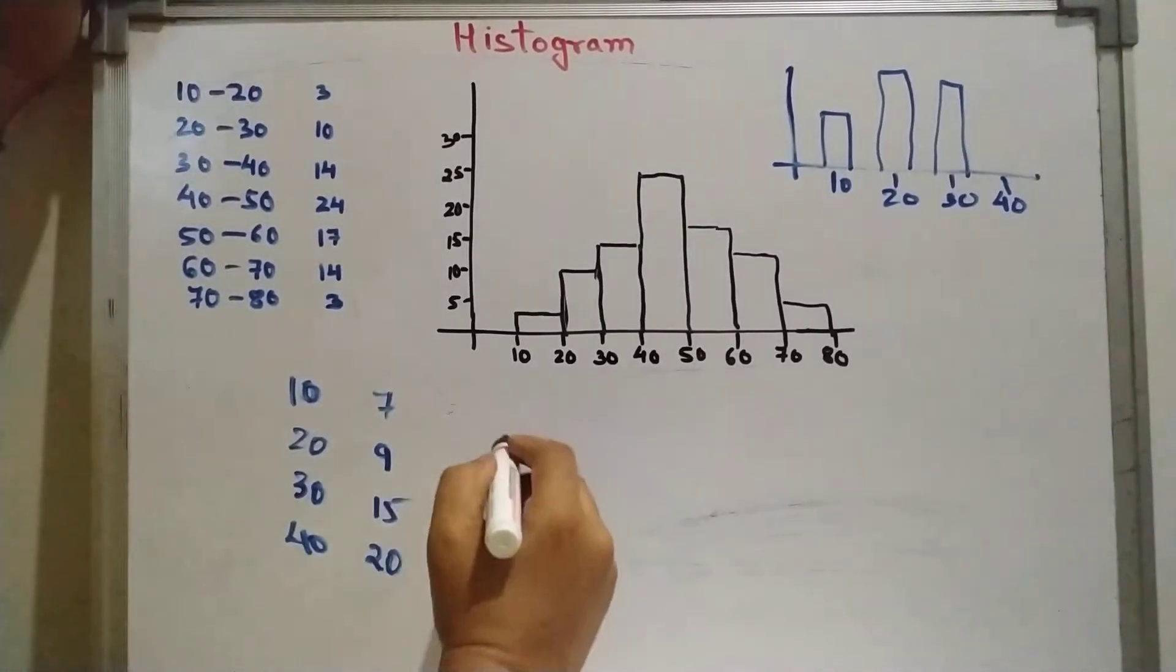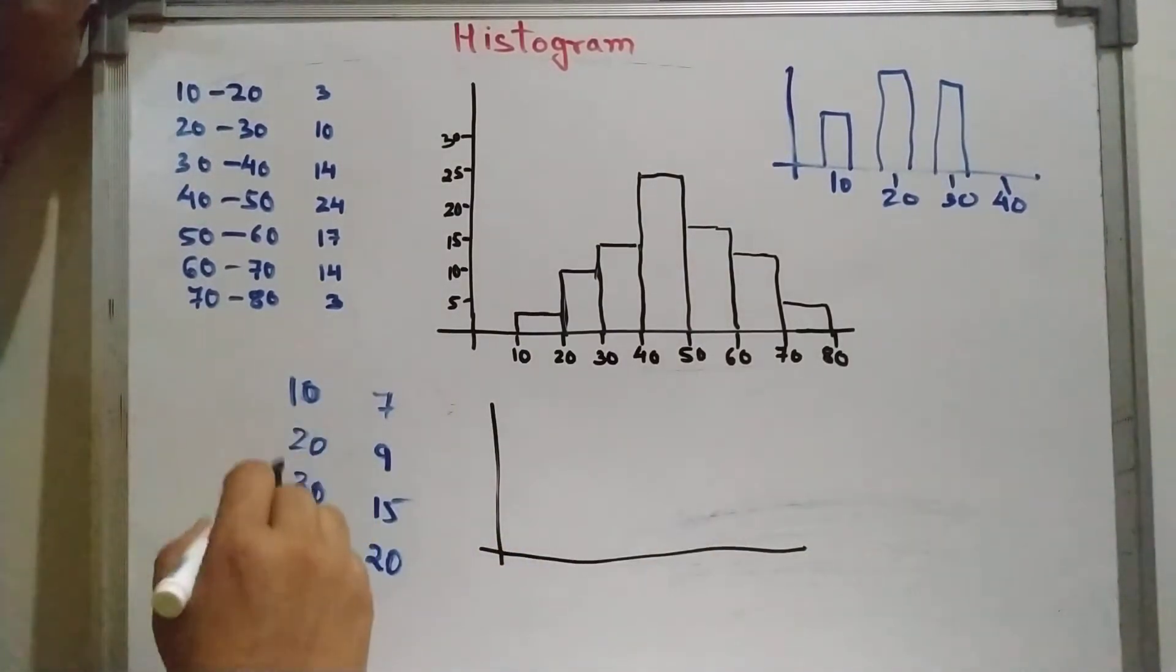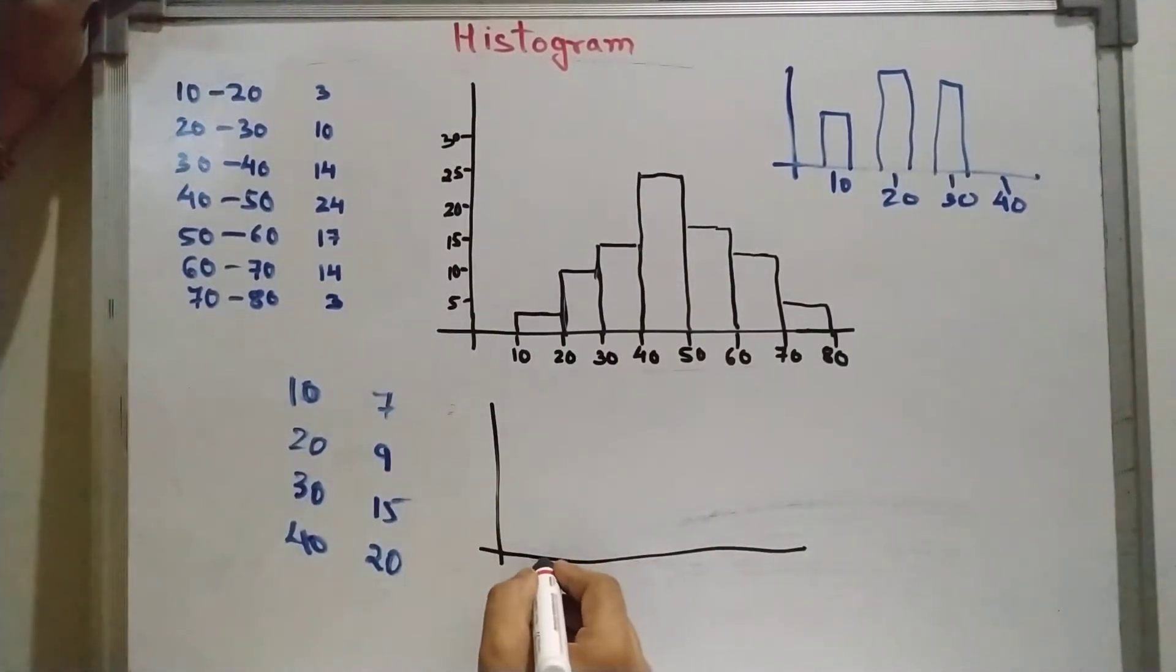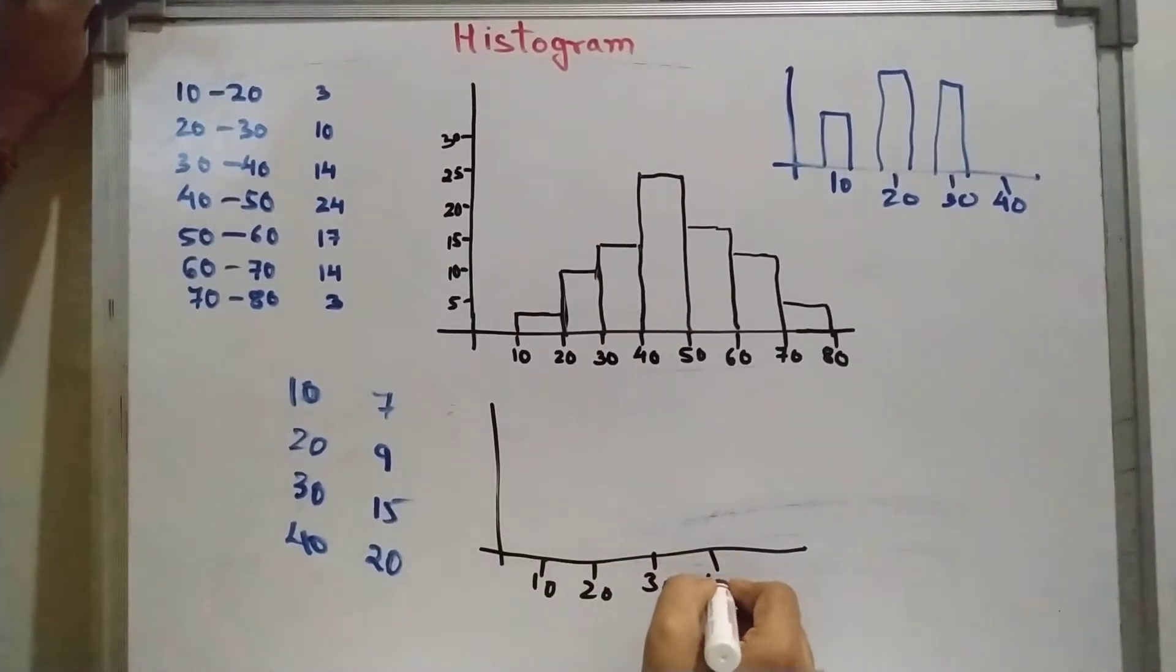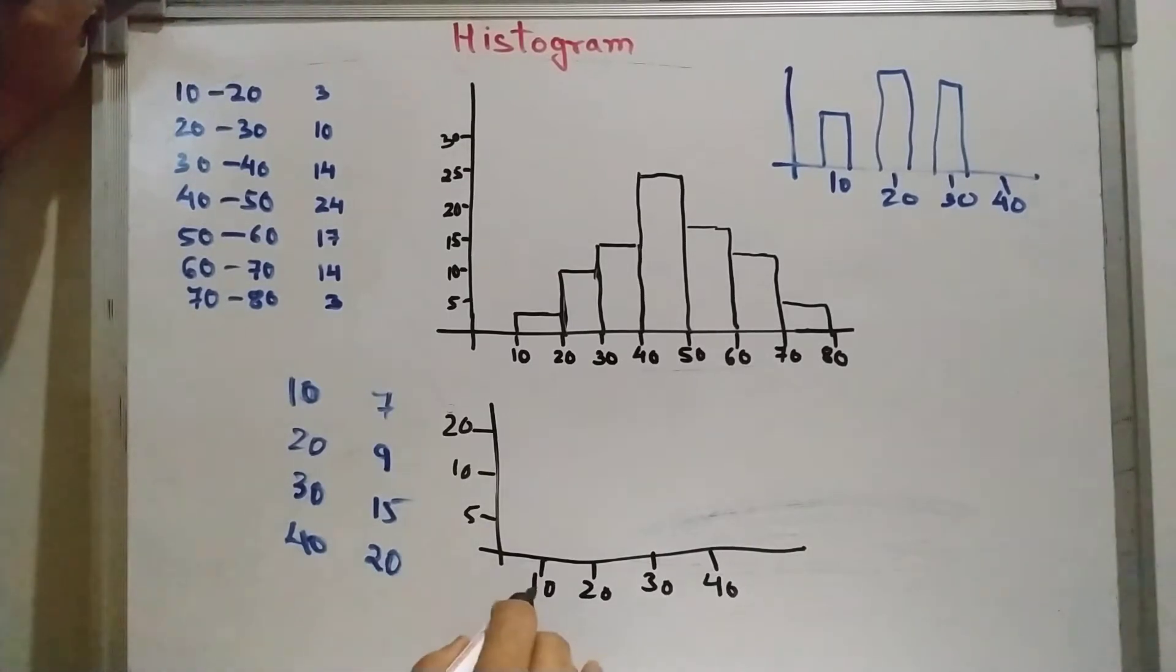Now for that also we can plot histogram. But in that case we have to take this as a mid value. Suppose this is your 10, 20, 30, 40. So here it is 5, 10, 20. We need to take 10 as a mid value. For 10, it is 7. So from here we raise up to 7 like this.